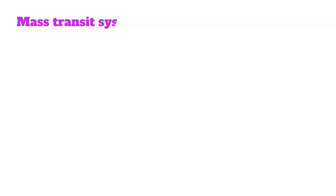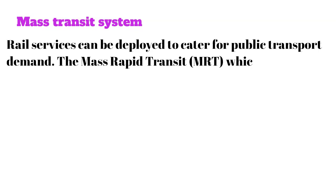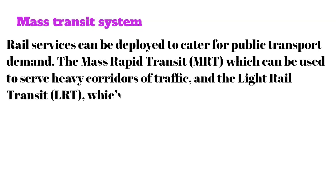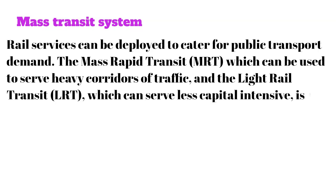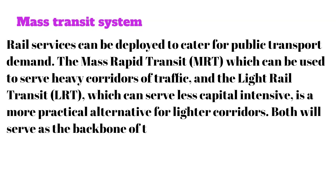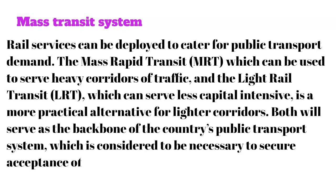Express buses can travel on expressways and have fewer stops, making the bus a comparatively attractive alternative to cars. Mass transit system: range services can be deployed to cater for public transport demand. The mass rapid transit MRT can be used to serve every corridor of heavy traffic, and the light rail transit LRT, which is less capital intensive, is a more practical alternative for lighter corridors. Both serve as the backbone of the country's public transport system, which is considered necessary to secure acceptance of public transport. The need for a mass transit system to cater for future demand was recognized as far back as the year 1940.